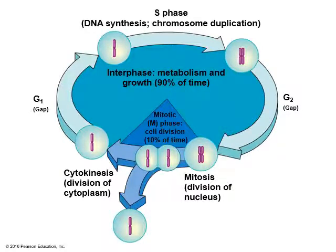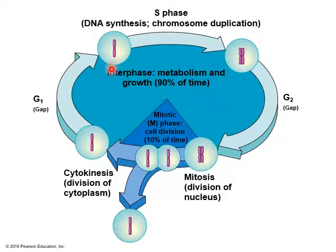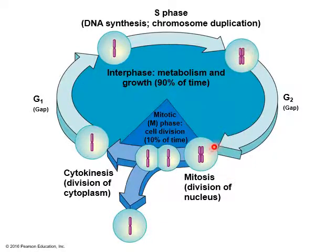Mitosis occurs during the mitotic phase, whereas most of the time a cell is in interphase — just growing, metabolizing, making proteins, doing normal cell business. Within interphase there's something known as the S phase, where S stands for synthesis. During the S phase, chromosomes are duplicated. We start with one chromosome, duplicate it, and produce sister chromatids. Then the cell goes into the mitotic phase for actual cell division.